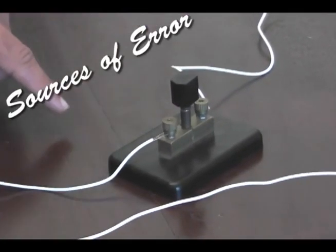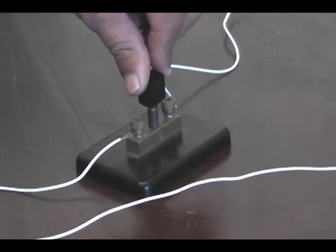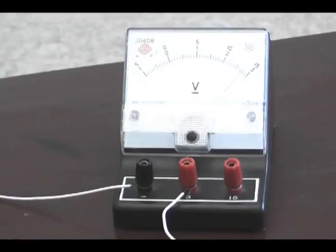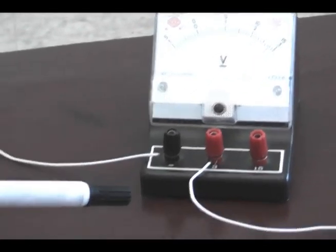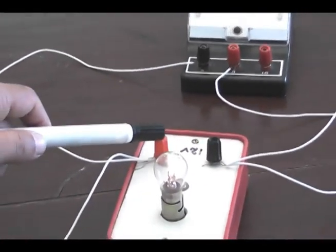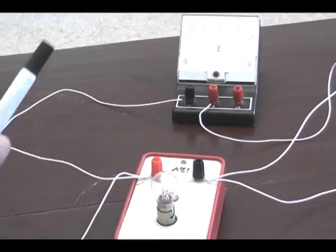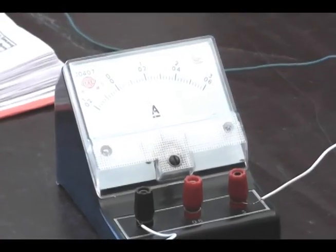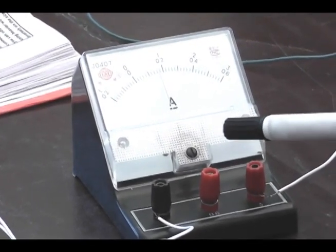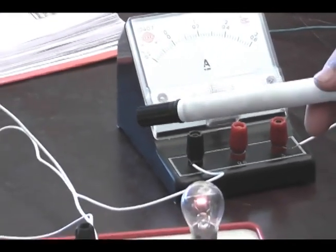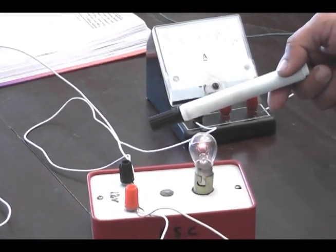While starting this experiment, students you should keep in mind that first of all you will turn on this key, turn on the circuit. Keep in mind that this voltmeter must be connected parallel to this tungsten filament, so that it measures the potential difference. You should also check that this ammeter must be connected in series with the tungsten filament, so that it should measure the current correctly.